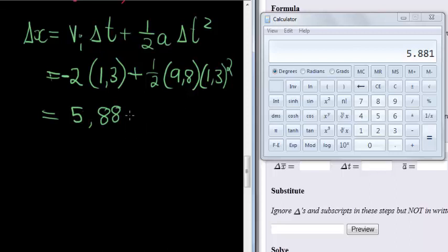The 5.881 will make it 5.88 if I round to two decimal places, which is common. Okay, meters per... Sorry, just meters, since it is displacement.